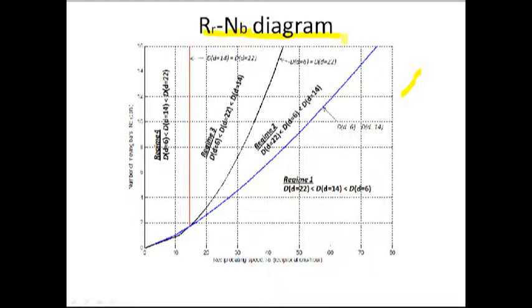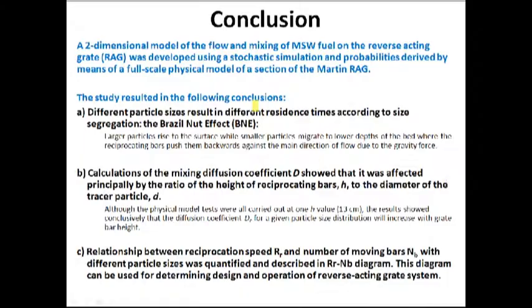This is the diagram of reciprocation speed and number of moving bars. For example, regime 1, the biggest mixing coefficient is the small particle. So, small particle has the largest mixing coefficient in regime 1.